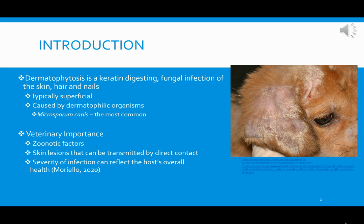For our presentation we chose dermatophytosis, a type of fungal infection of the skin, hair, and nails. This type of dermatophytic organism stays superficial in the skin layers. The one we're going to focus on is the most common for dogs and cats — Microsporum canis — which we'll go over in detail. The veterinary importance includes zoonotic factors; we can typically see skin lesions not only on the animals but also on the owners. We'll cover presenting signs, organism information, diagnostic tools, and treatment.